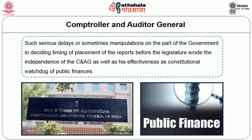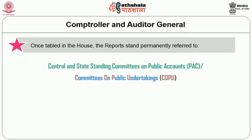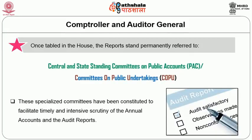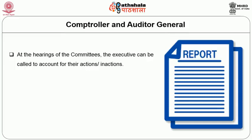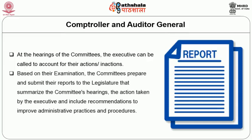Such serious delays or sometimes manipulations by the government in deciding the timing of placement of reports before the legislature erode the independence of the CAG as well as his effectiveness as constitutional watchdog of public finances. Once tabled in the House, the reports stand permanently referred to the central and state standing committees on public accounts or committees on public undertakings. These specialized committees facilitate timely and intensive scrutiny of annual accounts and audit reports, selecting the most critical findings and recommendations from CAG reports and arranging hearings. At these hearings, the executive can be called to account for their actions or inactions, and the committees prepare and submit reports to the legislature summarizing hearings, action taken by the executive, and recommendations to improve administrative practices and procedures.